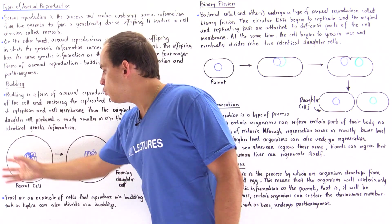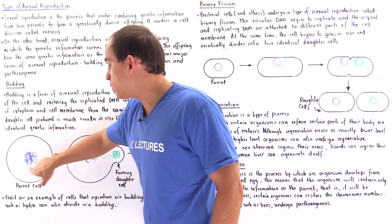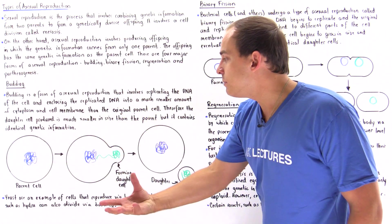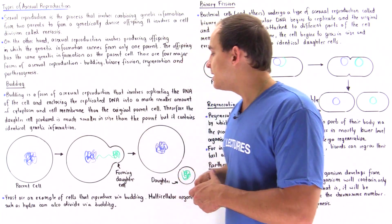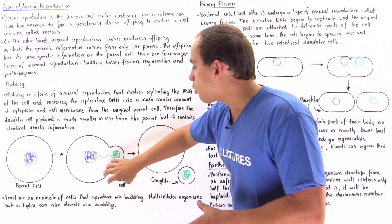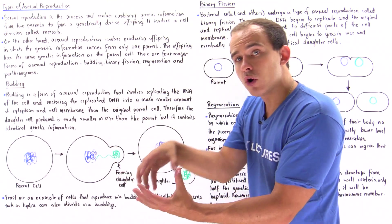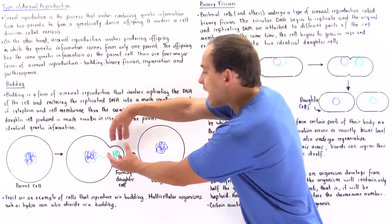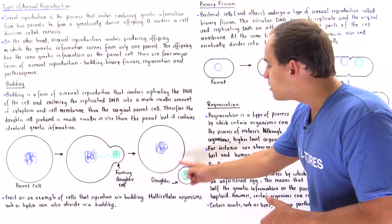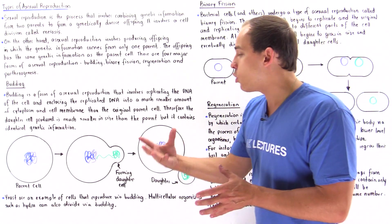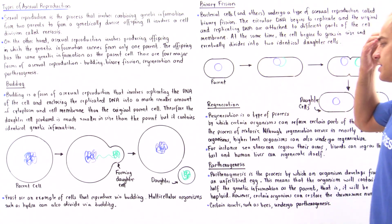We begin with the parent cell. The genetic information shown in blue begins to replicate, shown in green. The replicated DNA eventually becomes enclosed in a small portion of cytoplasm that buds off to form a small daughter cell. That daughter cell will then grow in size until it eventually matches the size of the parent organism.